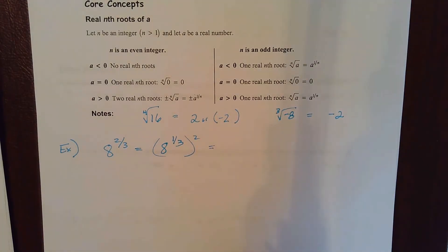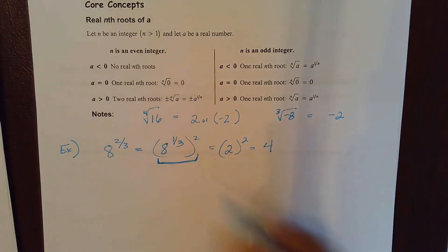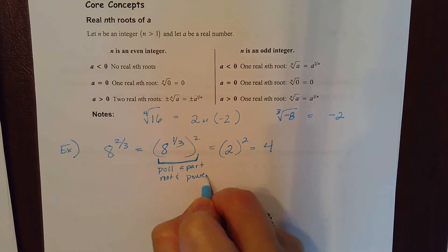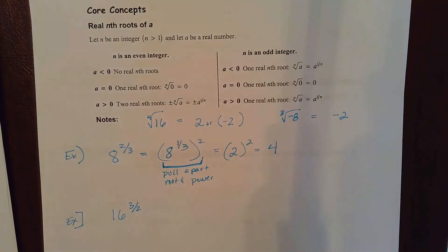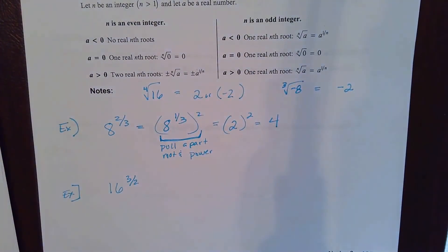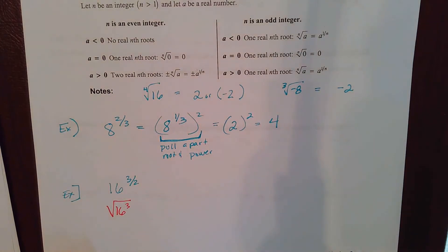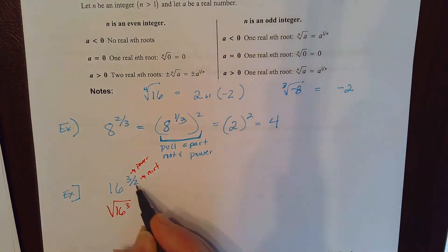For example, eight to the 2/3: what is 8 to the 1/3? That just means the cube root of 8, which is 2. So I'm taking 2 squared, which gives me 4. Another example: 16 to the 3/2 means you're taking 16 cubed — you could write it as the square root of 16 cubed. The 3 is your power and the 2 means square root, so this is 16 to the third power under a square root.